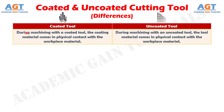Difference number 1. During machining with a coated tool, the coating material comes in physical contact with the workpiece material, whereas during machining with an uncoated tool, the tool material comes in physical contact with the workpiece material.